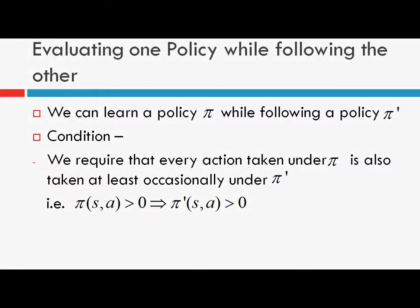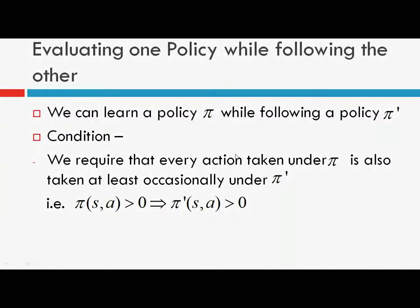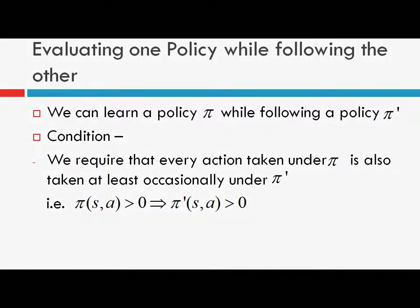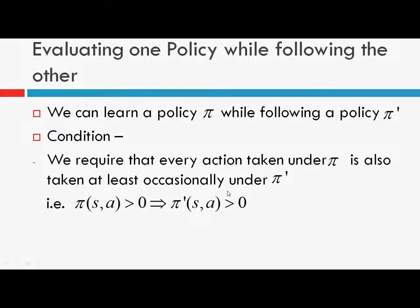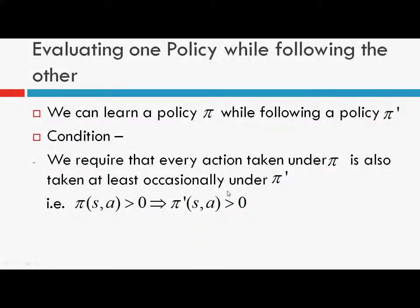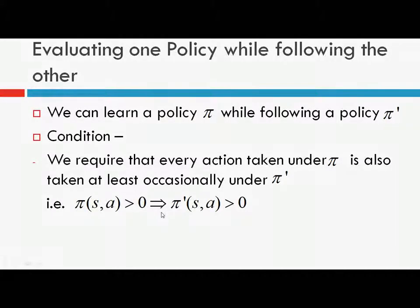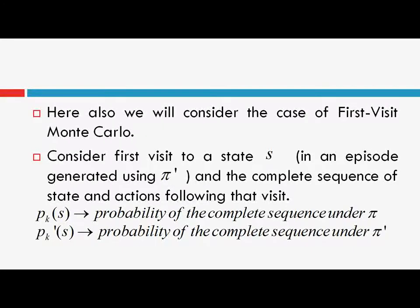The first question is: is it possible to do this? The answer is yes. All we require is that the actions taken under policy pi are also taken at least occasionally under policy pi-dash. That is, if the probability of selecting any state-action pair is non-zero under policy pi, then it should also be non-zero under policy pi-dash. This is the only requirement. Here we will consider first-visit Monte Carlo methods, as this whole lecture is devoted only to first-visit Monte Carlo.